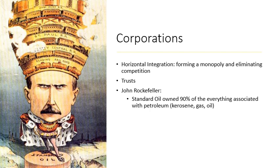These companies also used horizontal integration — basically forming a monopoly and eliminating all competition by taking control of all industries that do the same thing. That's what's known as the Standard Oil Trust, owned by John D. Rockefeller. Rockefeller owned Standard Oil, which owned 90% of everything associated with petroleum — kerosene, gas, oil — giving him control of the railroads and everything associated with oil production so he could charge whatever he wanted.